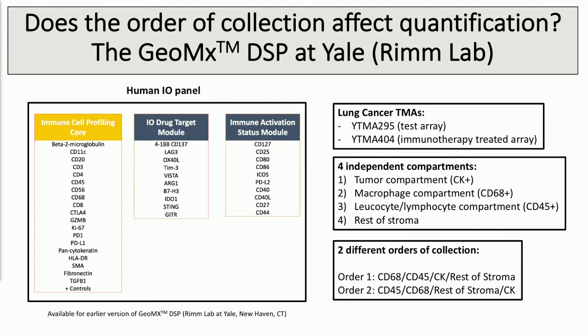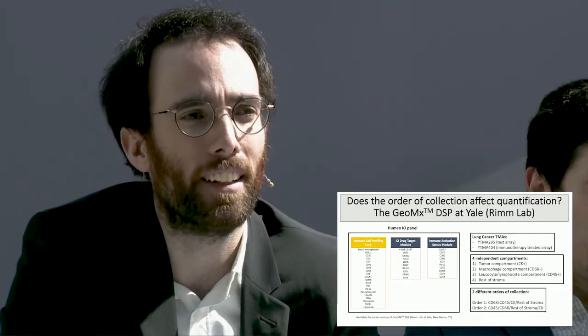The very first thing we did when we got the instrument at Yale was to perform on-site validation of the technology. We tested whether the order of collection of different compartments could affect quantification. If the compartmentalization process is not very accurate, or if the laser resolution is not very accurate, there is a risk of bleed-over in quantification between compartments in close proximity — this would lead to over-representation of targets collected first versus last. So we took two serial sections and tested two different collection orders: CD68, CD45, CK, rest of stroma versus CD45, CD68, rest of stroma, CK, then compared quantification between the two orders.